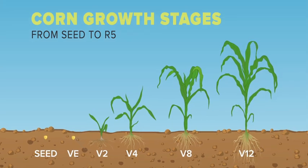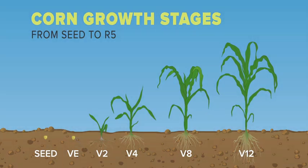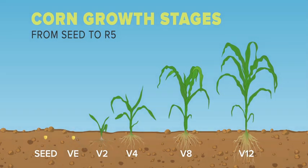During the V10 to V17 growth stages, any management practice that helps reduce plant stress and allows for adequate nutrient levels can help maximize yield potential.